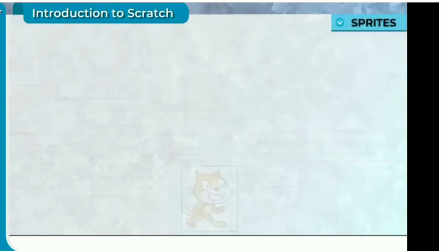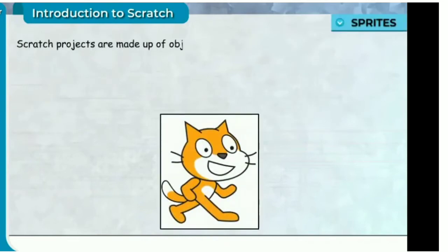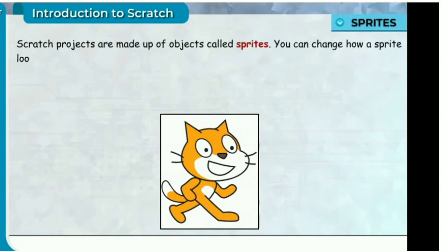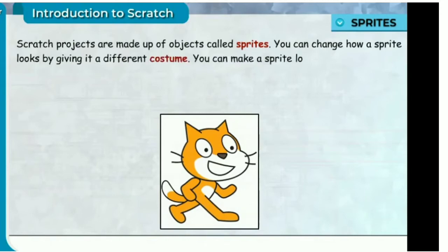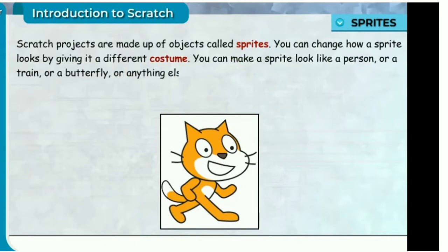Scratch projects are made up of objects called Sprites. You can change how a sprite looks by giving it a different costume. You can make a sprite look like a person, a train, a butterfly, or anything else. You can use any image as a sprite.